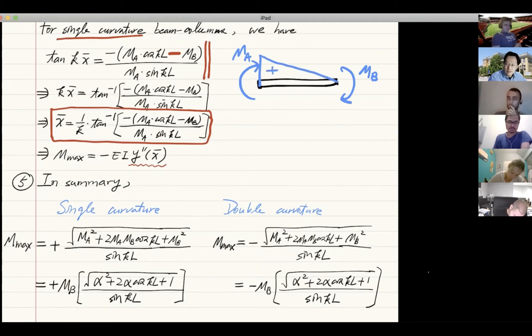What about for MB? The moment diagram goes under, so this is actually just the sign of MB. That's negative. Use this to associate with this negative sign—this is double curvature.